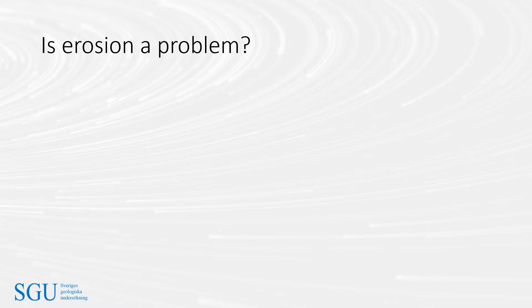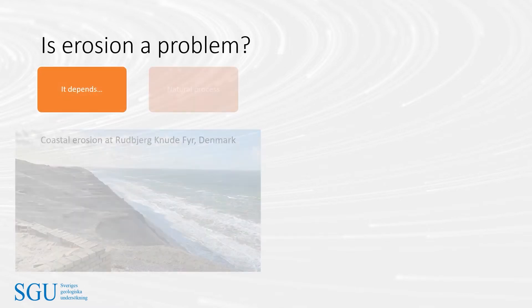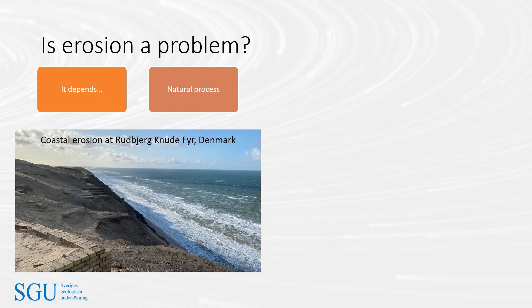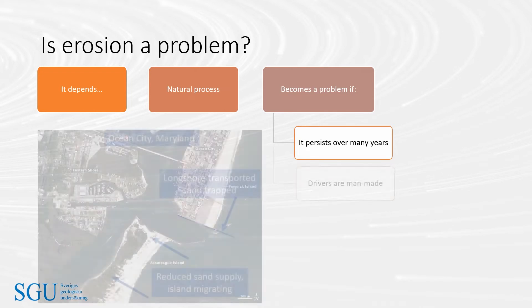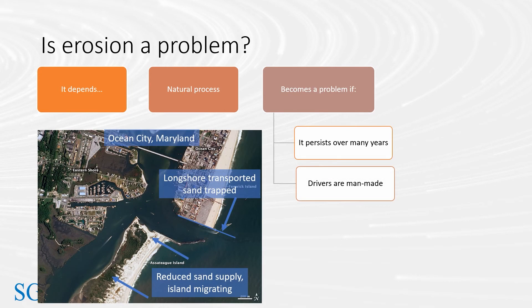So, is erosion a problem? Well, that depends. Erosion is a natural coastal process. It can become a problem firstly if it persists over many years rather than occurring in a cycle that includes accumulation of sediment that naturally repairs eroded coasts. Secondly, if the drivers of erosion are man-made, for example by interfering with natural sediment dynamics through coastal development or by increasing sea level by warming the planet.